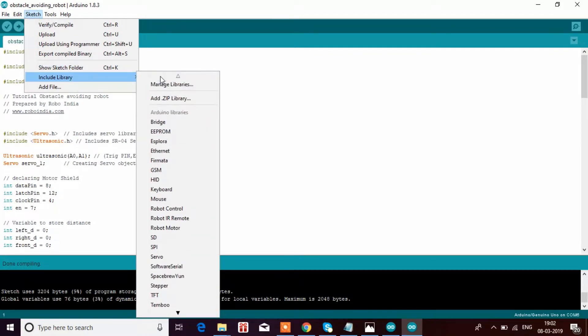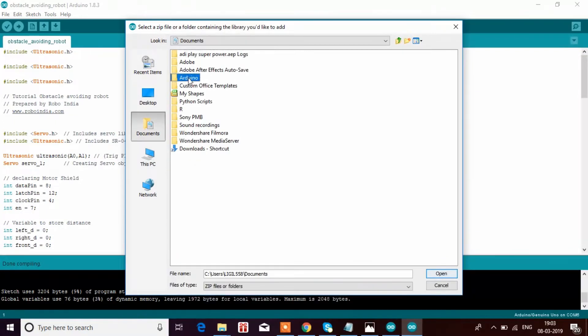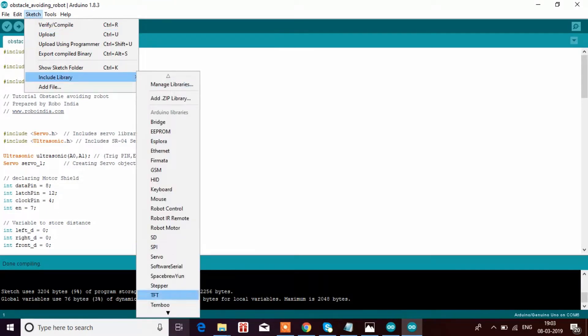You have to go to Sketch, Include Library. Then at the top you can see Add .ZIP library. Then you can go to the place where you have added it, Documents, Arduino, Libraries, and you can click on the ultrasonic library. I have already added it to my library, so I am not clicking on it.